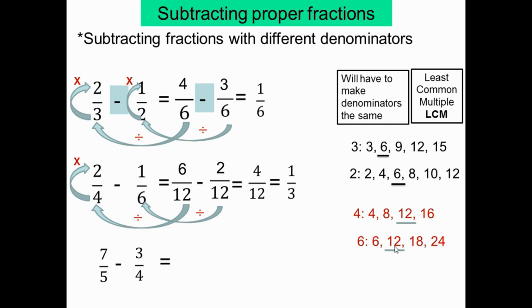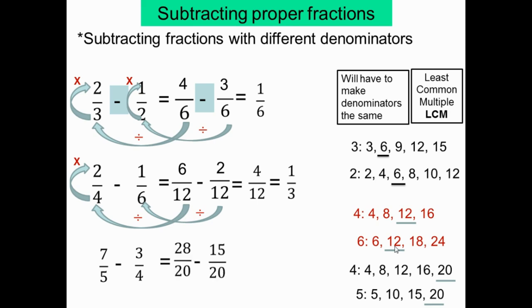Exercice suivant: 7 sur 5 moins 3 sur 4. Il faut trouver le LCM de 4 et 5. Les multiples de 5 et de 4 — le LCM est 20. Donc le dénominateur commun est 20. 20 divisé par 5 égal 4 fois 7 égal 28. 20 divisé par 4 égal 5 fois 3 égal 15. On soustrait: 28 moins 15 égal 13. La réponse est 13 sur 20. On vérifie: la fraction est simplifiée, donc c'est correct.